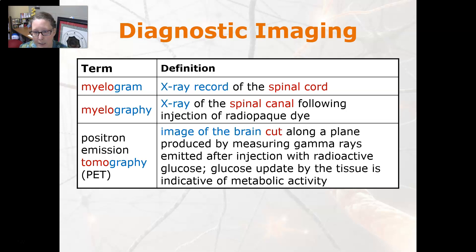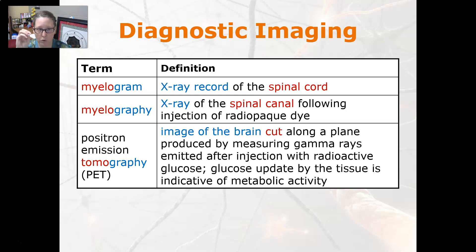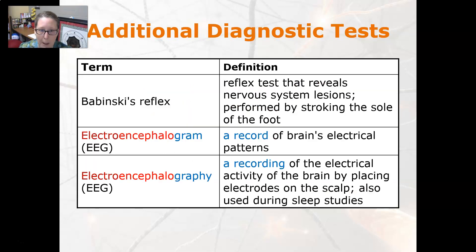is an image of the brain cut along a plane, produced by measuring gamma rays that are emitted after injection with radioactive glucose. The glucose uptake by the tissue is indicative of metabolic activity. For example, if there's a tumor, tumors have high metabolic activity, so that tumor will glow on the PET scan.